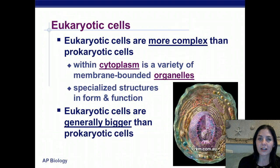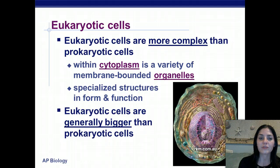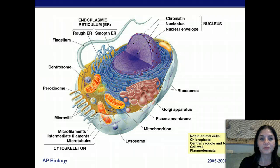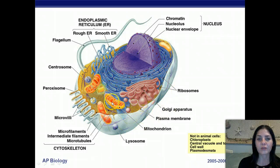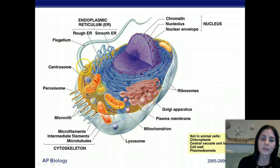Eukaryotic cells are much more complex than prokaryotic cells. Within their cytoplasm are a variety of membrane-bound organelles with specialized structures in form and function. Eukaryotic cells are also generally bigger. Here we see a eukaryotic cell with its nucleus, ribosomes on the endoplasmic reticulum, Golgi apparatus, and mitochondria — the sites of cellular respiration where ATP is produced. Some cells have flagella, like sperm cells.